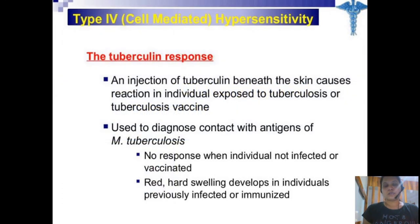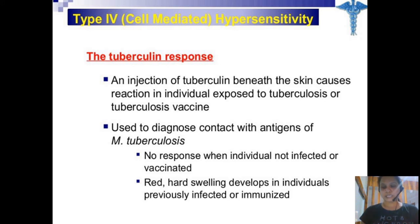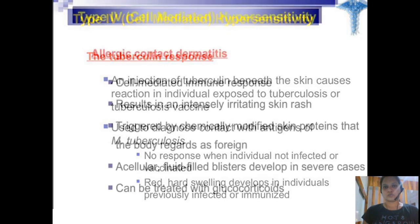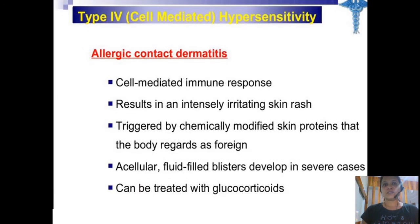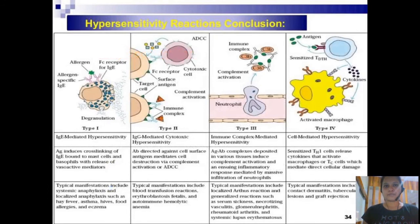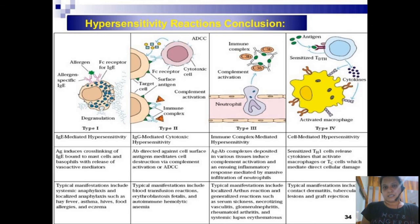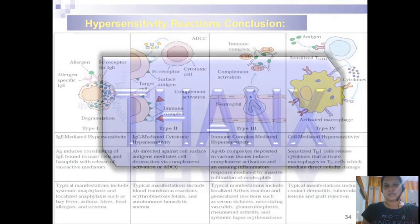The main example of type 4 hypersensitivity is the tuberculin test, which is used to detect TB in an individual — it is a skin reaction. The second example is allergic contact dermatitis. This comparison among all 4 types of hypersensitivity summarizes what we have studied across both sessions.